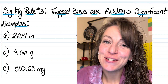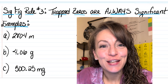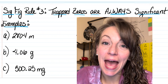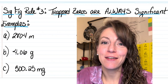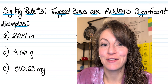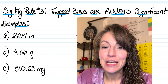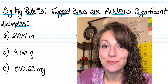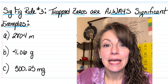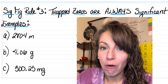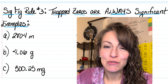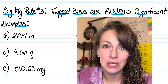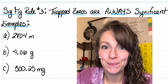Welcome, let's do some chemistry. In this video I'd like to talk about what's known as a trapped or captive zero and how they affect your total number of significant figures in a measurement. Trapped zeros are defined as zeros between non-zero digits in a measurement, and these zeros are always going to be significant, so you'll always add them into the total number of sig figs.